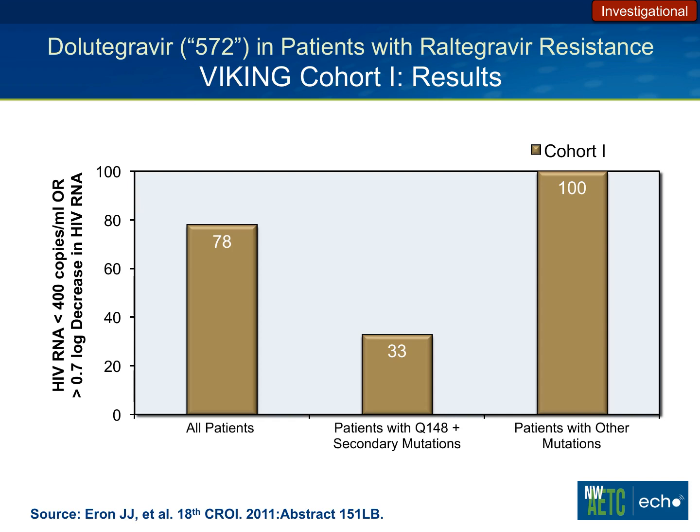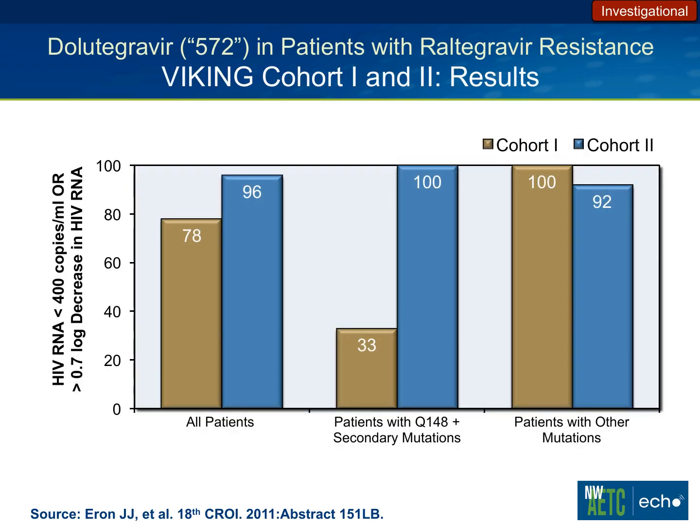What do we know about dolutegravir for salvage in terms of cross-resistance? Data from the Viking cohort — patients who failed raltegravir — showed that the Q148 mutation with secondary mutations predicted poor response. In the second phase of that study, they doubled the dolutegravir dose and achieved very good responses. A unique feature of this drug is two doses: a standard dose for treatment-naive patients, and an enhanced or double dose for patients with documented integrase resistance. This drug looks like it has great potential even as a second-line agent in most patients.